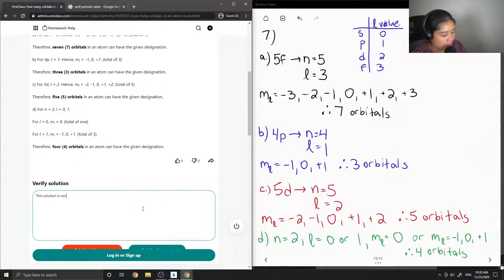So the solution is correct. And then I'll just put in brackets for the f subshell, l is equal to three.